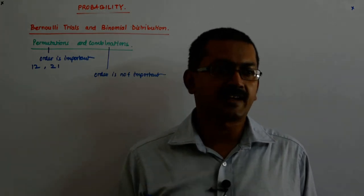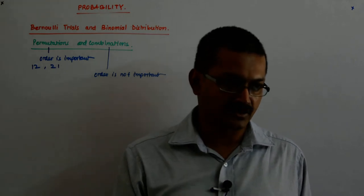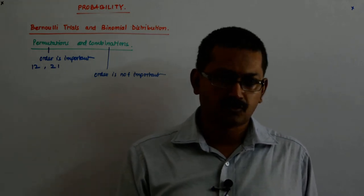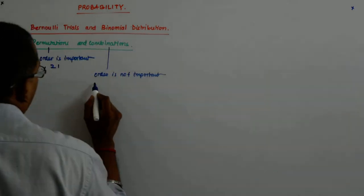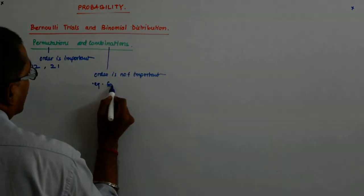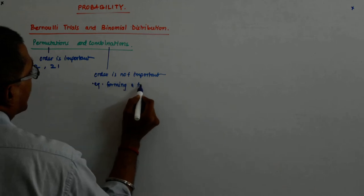You just check whether if you change the order, things change. So forming a team, for example, forming a team is a combination.